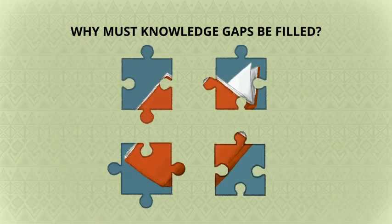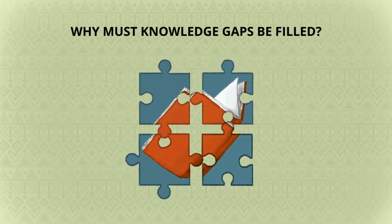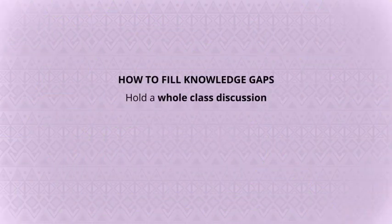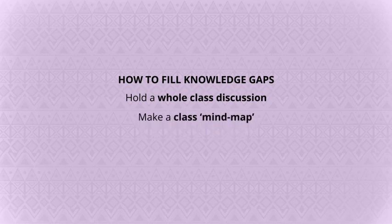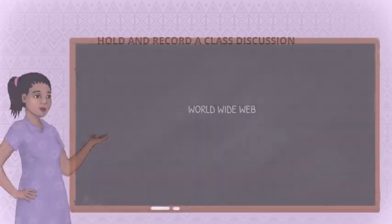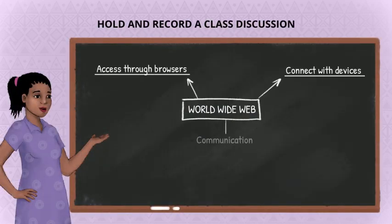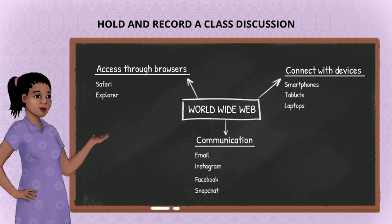We can help struggling learners to build their background knowledge in the following ways. Hold a class discussion and build one mind map on the chalkboard to record all learners' background knowledge of a topic. This way, learners can learn from each other before reading. If the mind map is sparsely populated, share some of your own background knowledge.